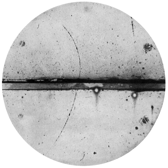Dirac wrote a follow-up paper in December 1929 that attempted to explain the unavoidable negative energy solution for the relativistic electron. He argued that an electron with negative energy moves in an external field as though it carries a positive charge. He further asserted that all of space could be regarded as a "sea" of negative energy states that were filled, so as to prevent electrons jumping between positive and negative energy states. The paper also explored the possibility of the proton being an island in this sea, and that it might actually be a negative energy electron. Dirac acknowledged that the proton having a much greater mass than the electron was a problem, but expressed hope that a future theory would resolve the issue.